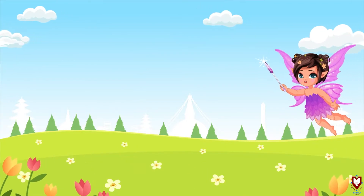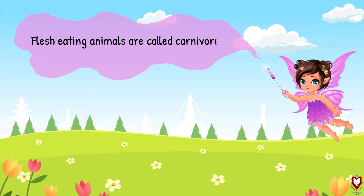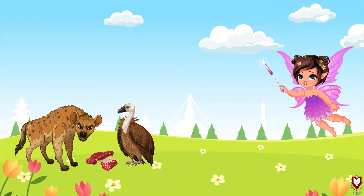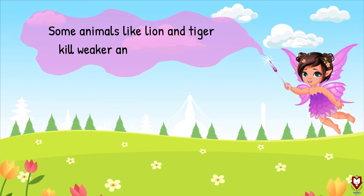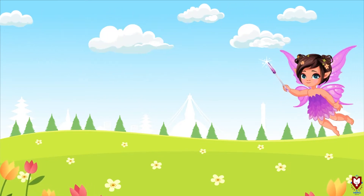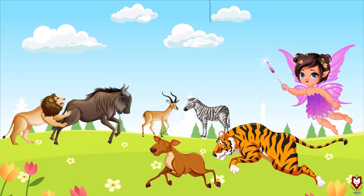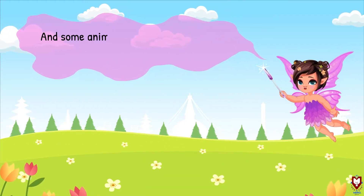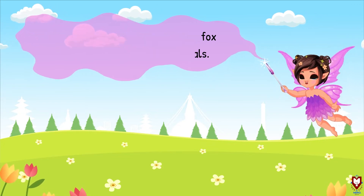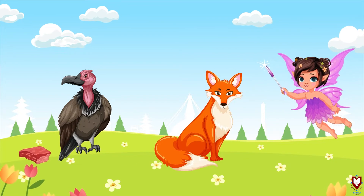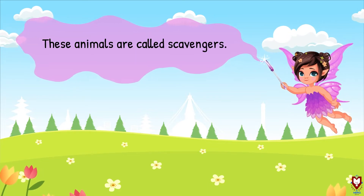The next type of animal is carnivores. Flesh-eating animals are called carnivores. Some animals like lion and tiger kill weaker animals for food. Some animals like vulture and fox eat the dead bodies of other animals — these animals are called scavengers.